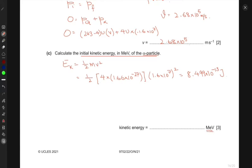They're asking in mega electron volts. One mega electron volt is 10^6 times 1.60 × 10^-19 joules, which is 1.60 × 10^-13 joules. Converting by dividing 8.499 × 10^-13 by 1.60 × 10^-13 gives 5.31 MeV.